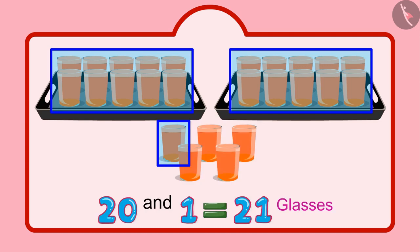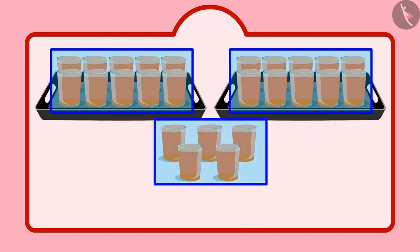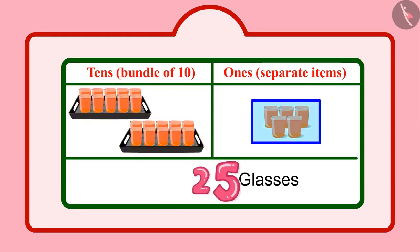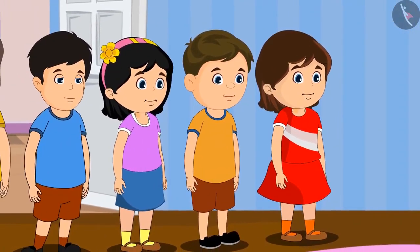That makes it 21, 22, 23, 24, 25. Chotu distributed 25 glasses of sherbet. Children, in these 25 glasses, 2 means 2 tens and 5 means 5 units.